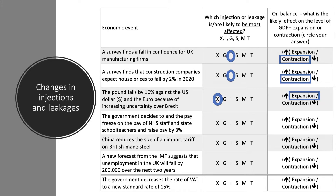Fourth: the government decides to end the pay freeze on NHS staff and state school teachers and raises pay by three percent. My instinct here is this is mainly a fiscal stimulus — an increase in government spending, which other things being the same is likely to be expansionary on GDP. Fifth: China reduces the size of a tariff on British-made steel. This is likely a change in exports, which will be expansionary for the economy.